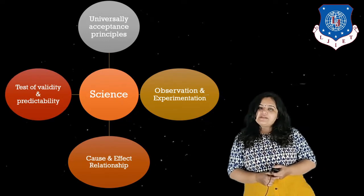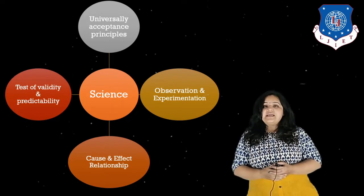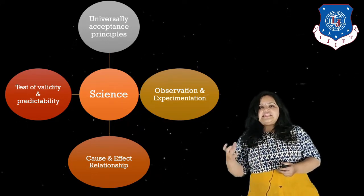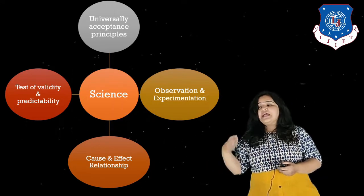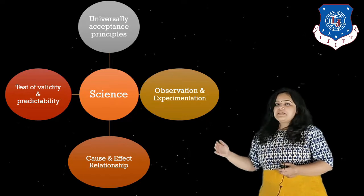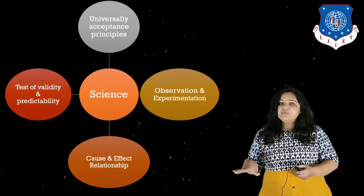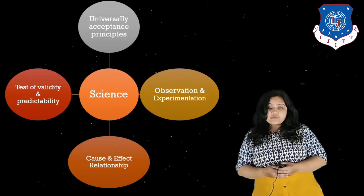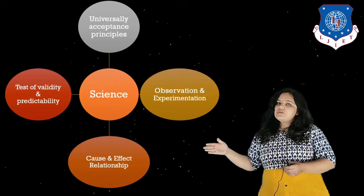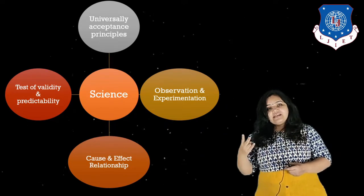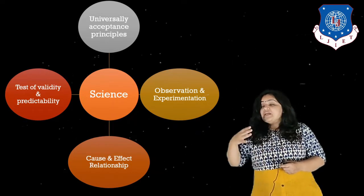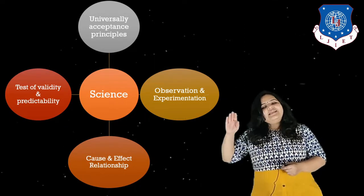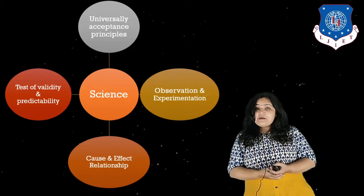Last but not the least, each and everything in management can be tested and validated using proper tests. You can test it time and again — for example, by giving proper increments and a proper work environment to an employee, obviously they would work better than someone in the worst work environment. So all the principles and laws of management can be tested, validated, they have a cause and effect relationship, they are derived from experimentation, and they are universally accepted. That is why management is science.